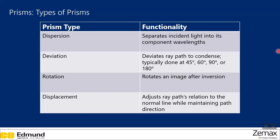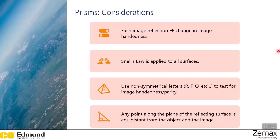Here are four simple considerations to keep in mind for prisms. First, each image reflection yields a change in image handedness — referring to whether the image rotates clockwise or counterclockwise. Second, Snell's law will be applied to all surfaces of the prism. Third, it's helpful to use non-symmetrical letters like R, F, and Q when testing prism performance, rather than symmetrical letters like O or H. And lastly, any point along the plane of the reflecting surface is equidistant from the object and the image.